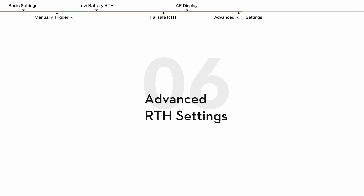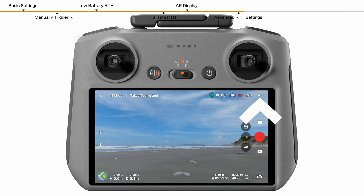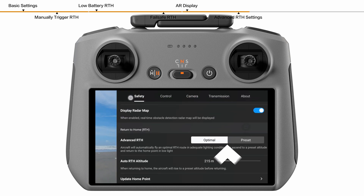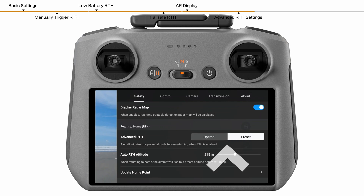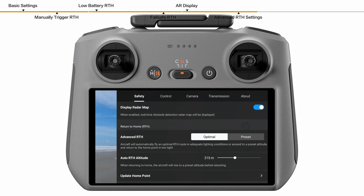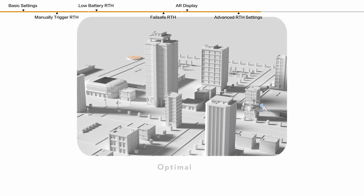Advanced RTH settings. Enter the safety settings and set the advanced RTH to optimal or preset. Optimal is the default setting. When optimal is selected, the aircraft will automatically plan the optimal RTH path and adjust the altitude according to the environmental conditions, regardless of the RTH altitude setting. With optimal RTH, the aircraft travels the shortest distance possible, reducing the amount of battery power used and increasing the flight time.